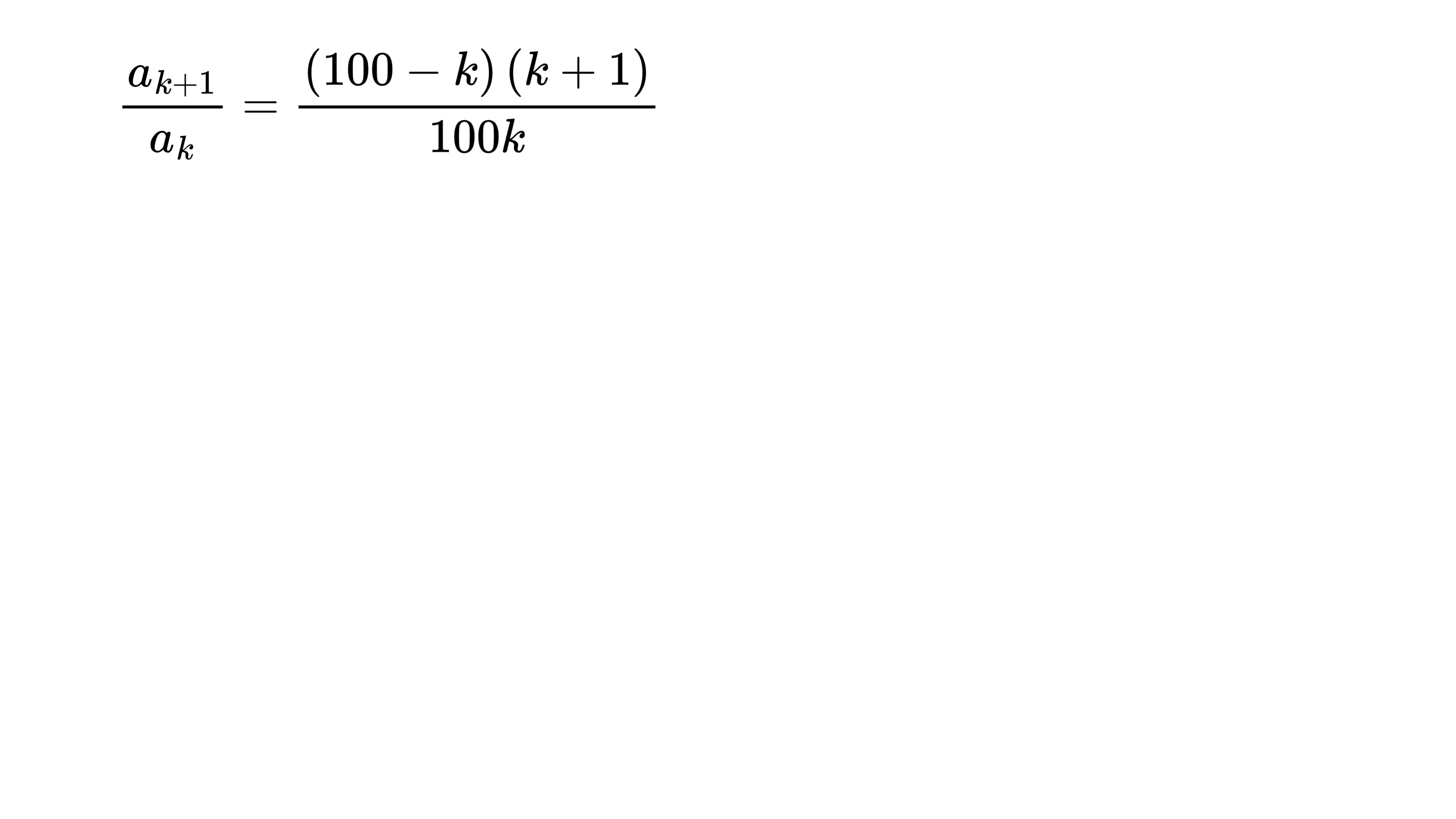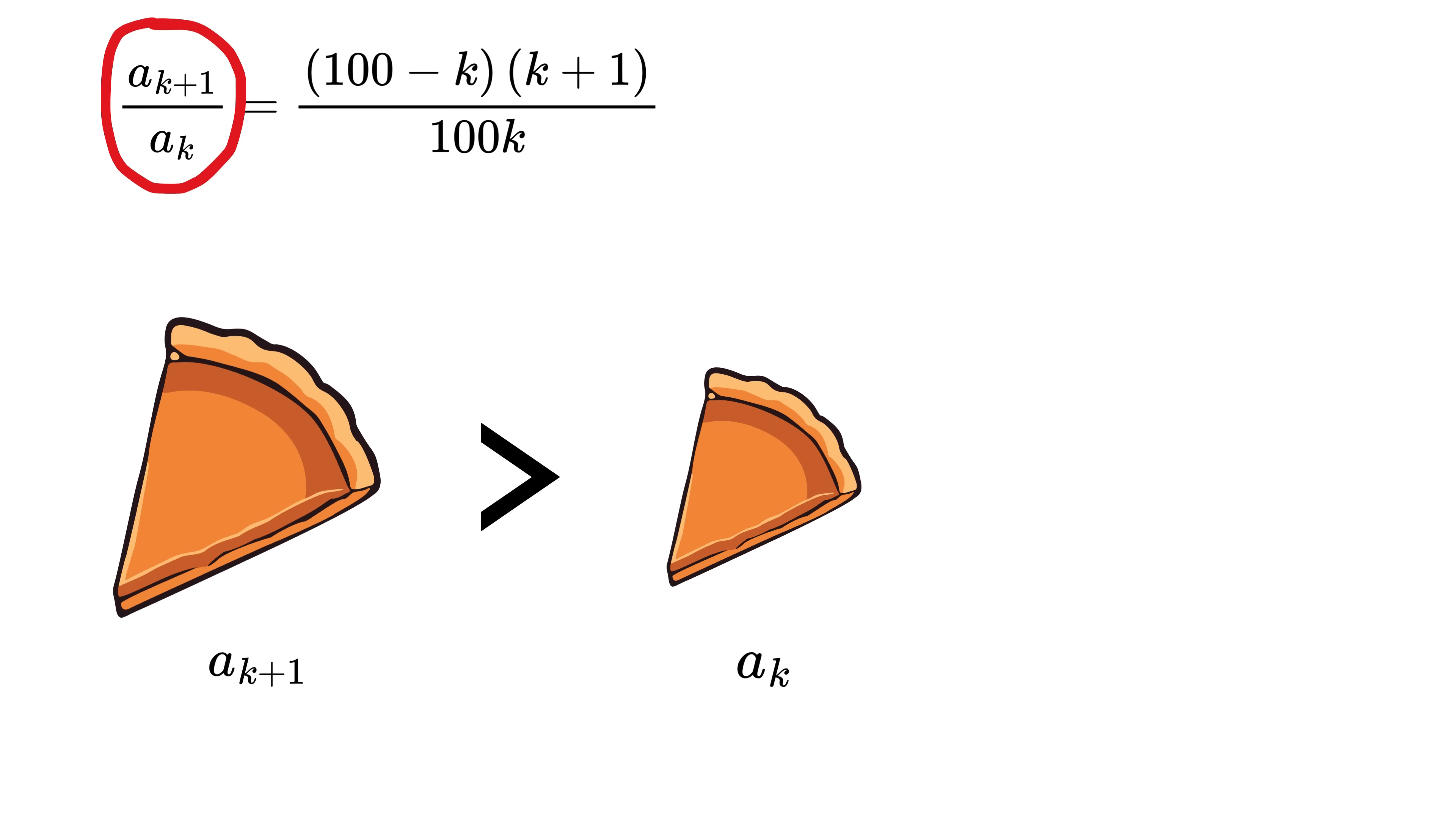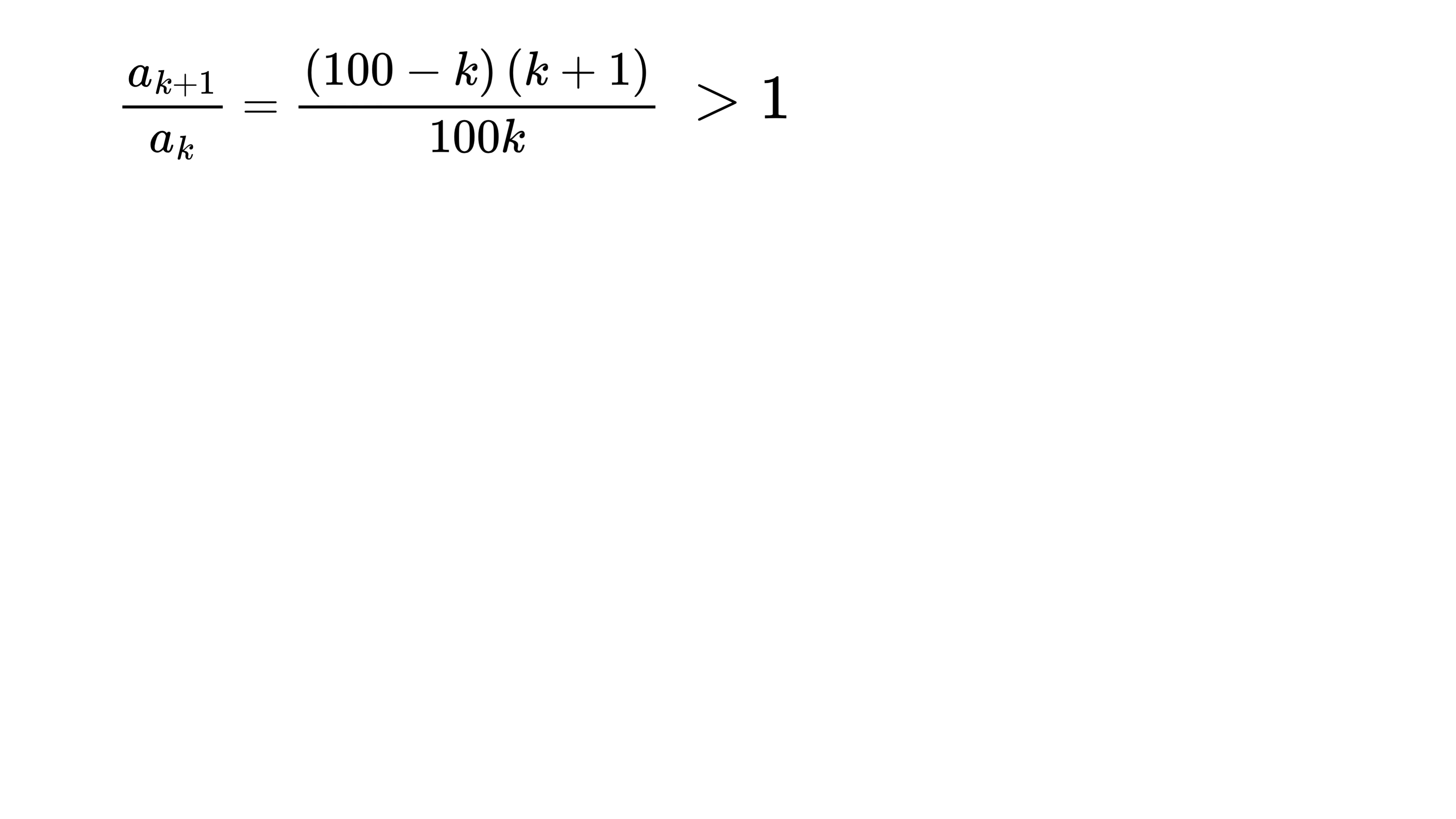Now comes the key idea: the slice for the next person k plus 1 will be bigger only if this entire fraction is greater than 1. So we form an inequality saying that this fraction should be greater than 1. All the terms involved are positive, so we can safely cross multiply and then simplify it. On expanding, we get this. 100k gets cancelled out, and we get 100 greater than k squared plus k. So we get a clear condition: the slice grows larger as long as the quantity k squared plus k is less than 100.